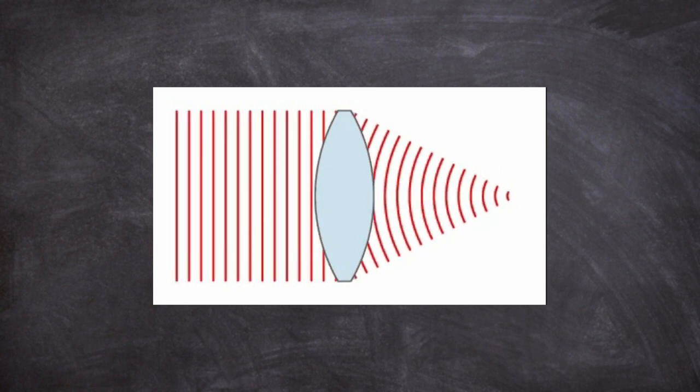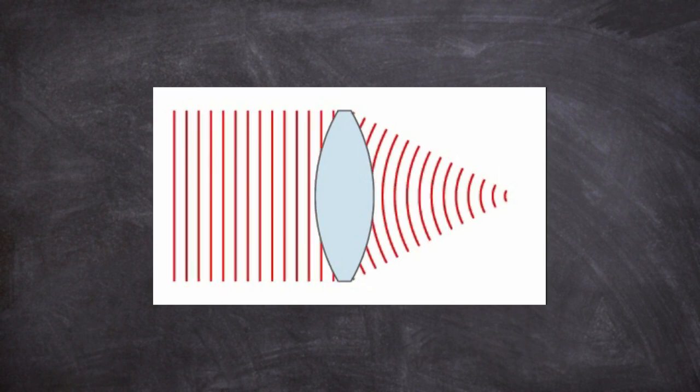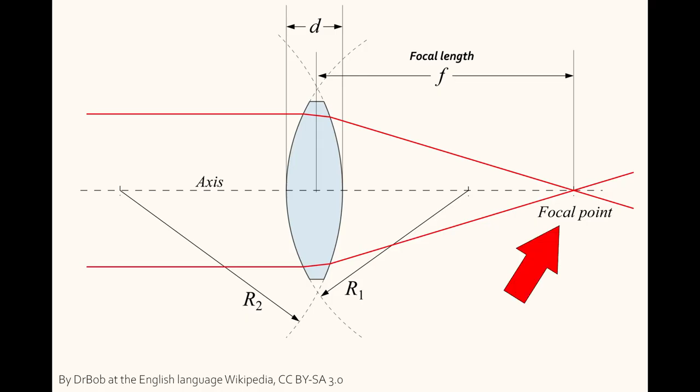That's for parallel light beams only but stars tend to have such so we're safe. The point of focus is called focal point and the length from lens to focal point is called focal length. So this is the main mechanism and it's great and simple but has one major disadvantage.